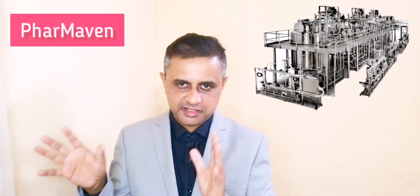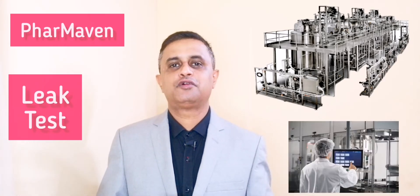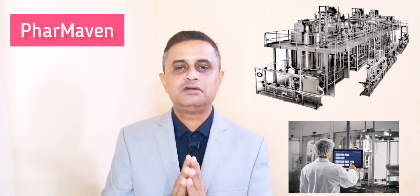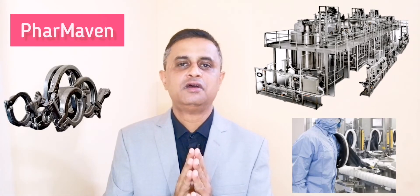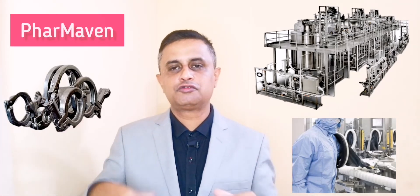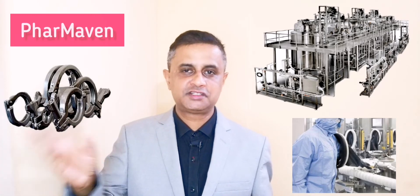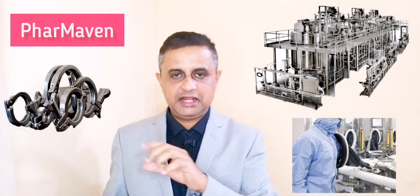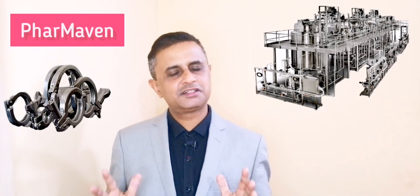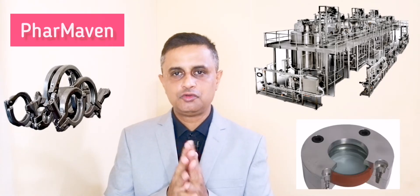In a skid system with multiple vessels and multiple connections, a leak test of the entire system is very, very important. You have to perform the leak test just before your sterilization cycle — not after any intervention. No further connections or interventions should happen once you have completed your leak test. Then go directly for processing, whether media fill or product.